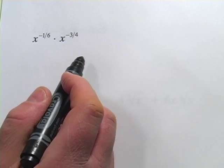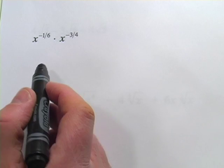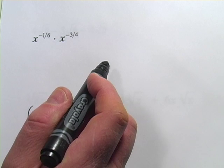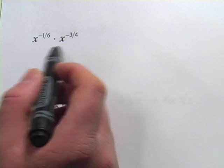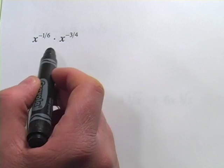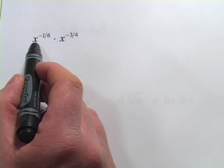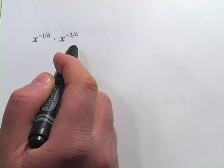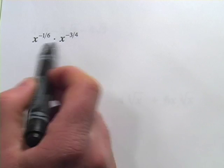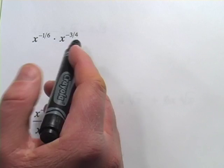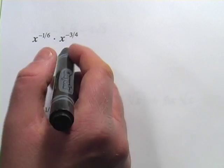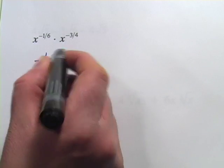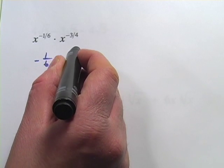In these problems, we're being asked to simplify some expressions with negative and fractional exponents. In this first one, we're multiplying x to the negative one-sixth times x to the negative three-fourths. When you multiply, you're going to add the exponents, and that's really all there is to this problem. We want to add negative one-sixth and negative three-fourths.